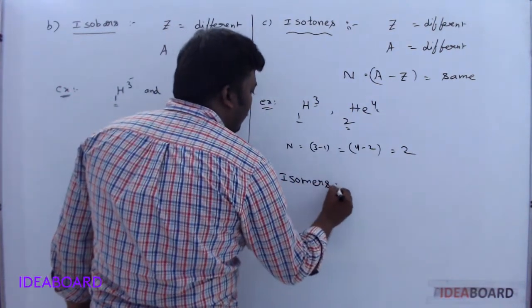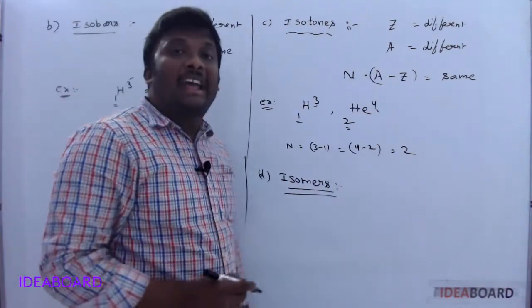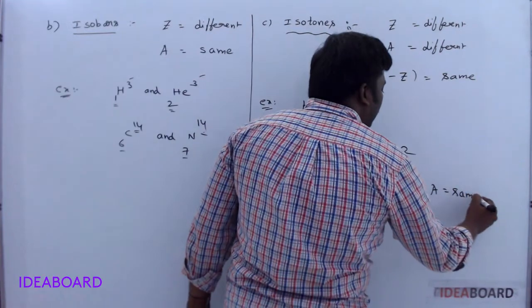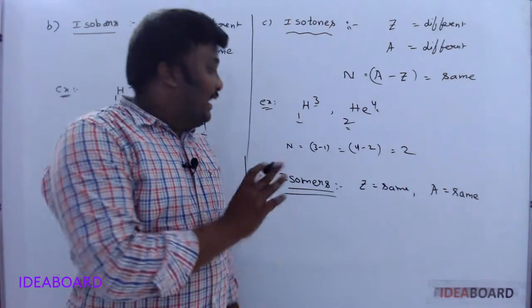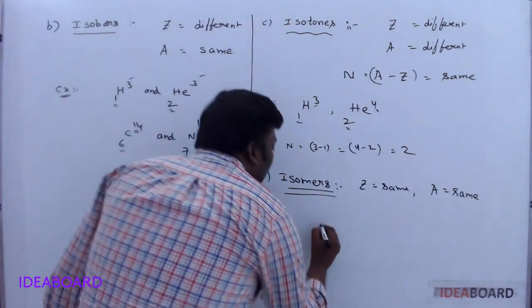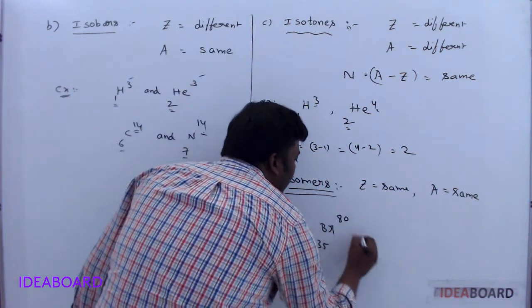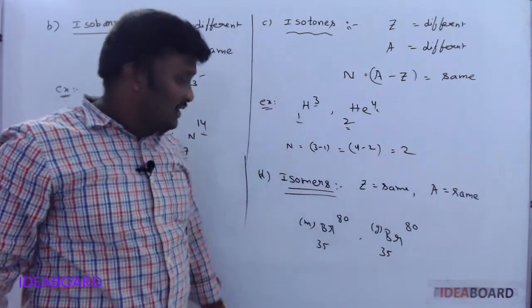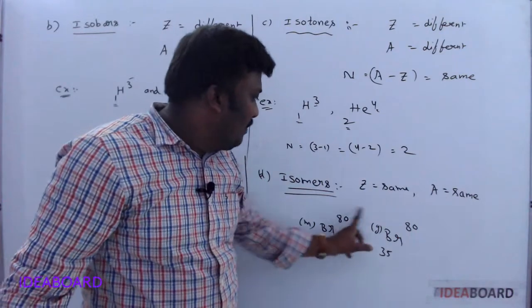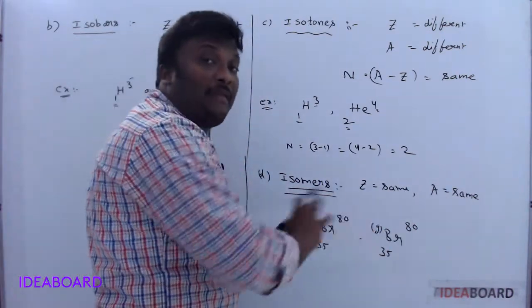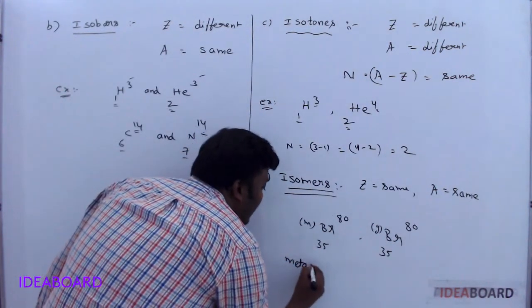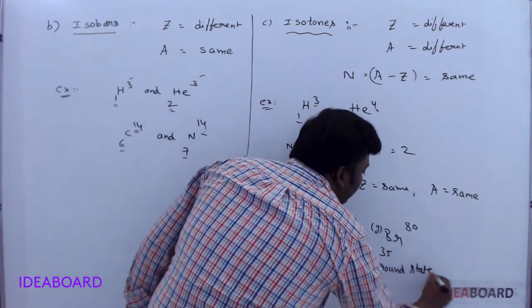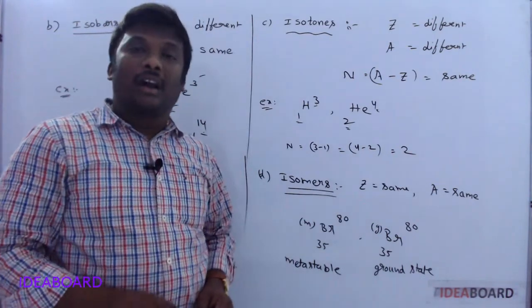Next, isomers. Isomers are nuclei having the same atomic number and the same mass number, but different radioactive properties. For example, Bromine-3580 written as Br35-80g (ground state) and Br35-80m (metastable state). Atomic number is the same, mass number is the same, but they have different radioactive properties. Here m indicates the metastable state and g indicates the ground state.